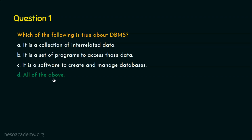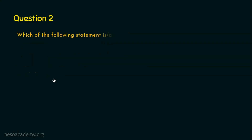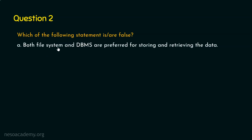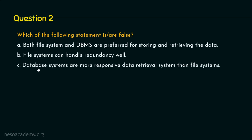We are done with question number one. Let's now move on to question number two. The question is: which of the following statement is or are false? Option A: both file system and database management system are preferred for storing and retrieving the data. Option B: file systems can handle redundancy well. Option C: database systems are more responsive data retrieval system than file systems. And option D: concurrent access may lead to inconsistency.